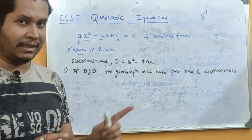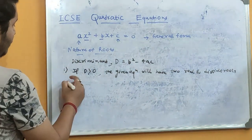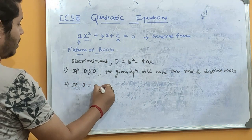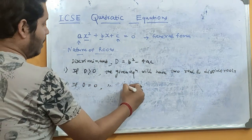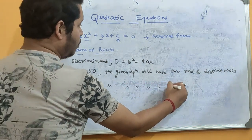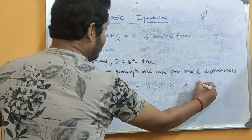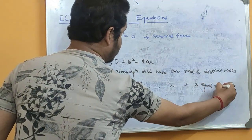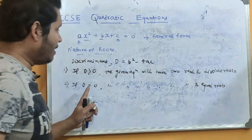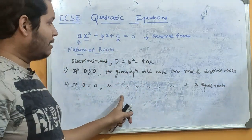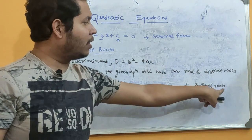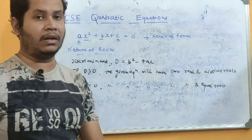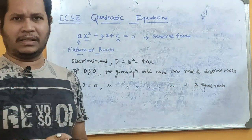The second case: if D is equal to 0, always remember that the given equation will have two real and equal roots. This is very important — if the discriminant is 0, the equation will have equal roots. This condition can be used for multiple types of exam questions.